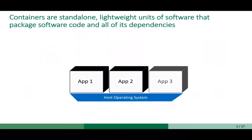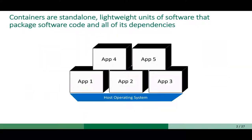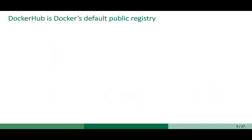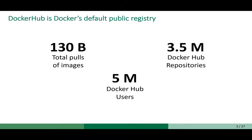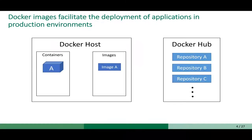Let's begin with containers. Containers are standalone lightweight units of software that package software code and all of its dependencies inside it. As these containers are very lightweight, you can run multiple of them on one host operating system. Docker is the most famous containerization framework, and Docker Hub is Docker's public and default registry. Docker Hub has a total of 130 billion pulls of images, three and a half million repositories, and also five million users.